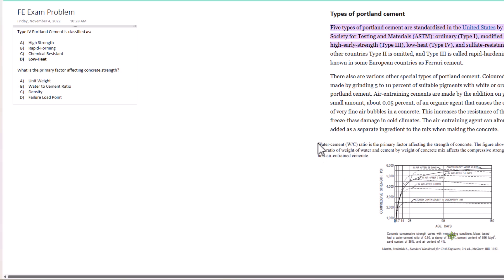water to cement ratio is the primary factor affecting concrete strength. They have a graph here. Think about it: the more water in the mixture, the weaker it will be because less of it contains aggregate. While unit weight does play a factor, water to cement ratio plays the greatest role. The answer is B.